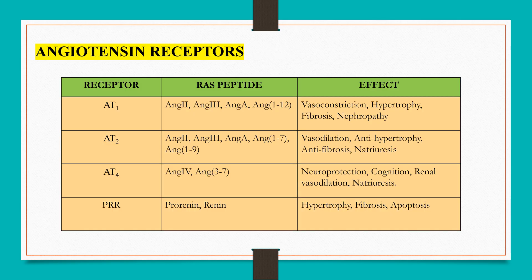Angiotensin synthesized by the renin-angiotensin-aldosterone system acts on angiotensin receptors present on target tissue to produce its effects. Angiotensin 1 receptors produce vasoconstriction, hypertrophy, fibrosis, and nephropathy. Angiotensin 2 receptors produce vasodilation, antihypertrophy, antifibrosis, and natriuresis.